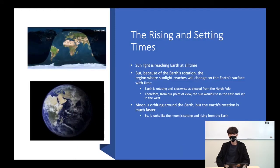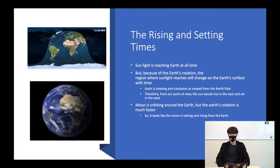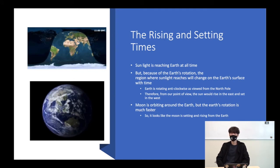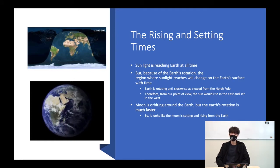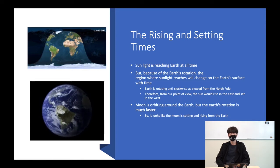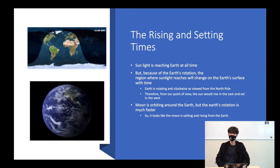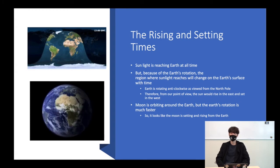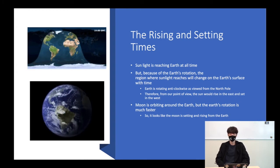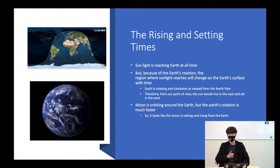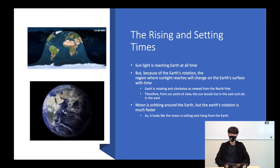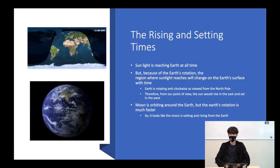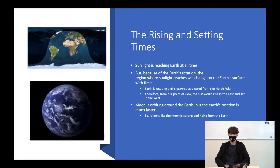In the morning or at night, we can see the Sun is rising in the east and setting in the west. And although it looks like the Sun is moving, the Sun is actually standing still. The sunrise and sunset are created by the rotation of the Earth.